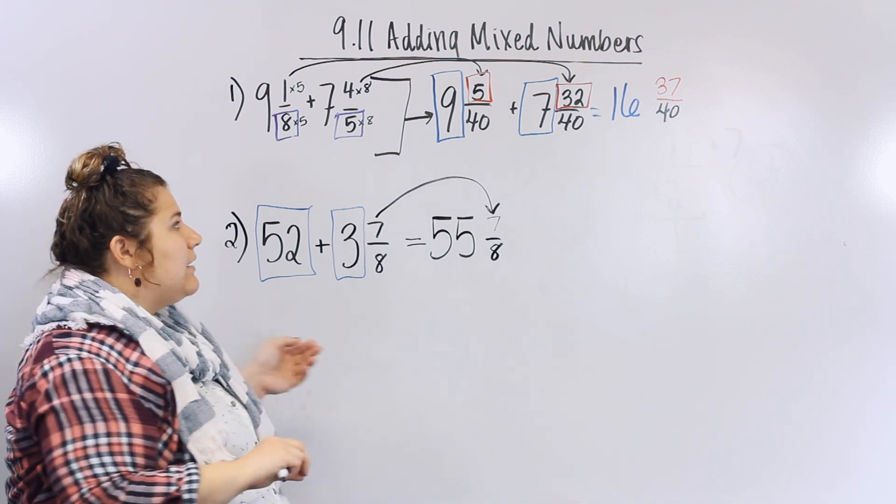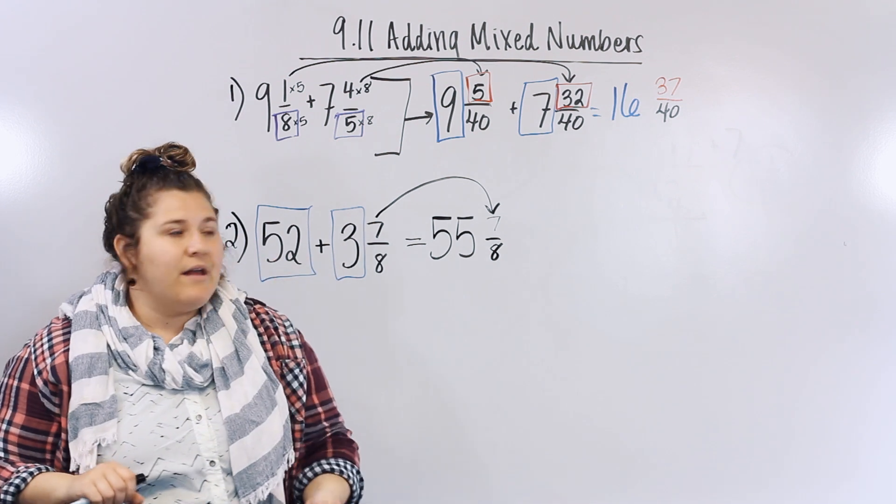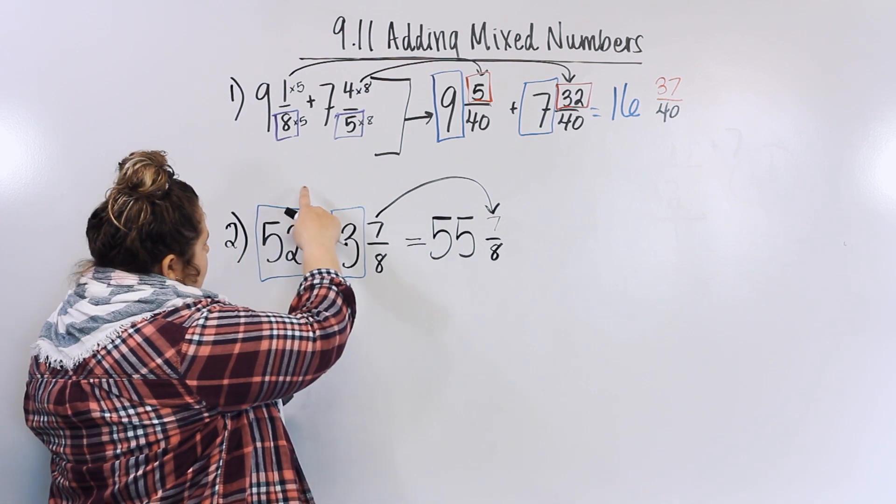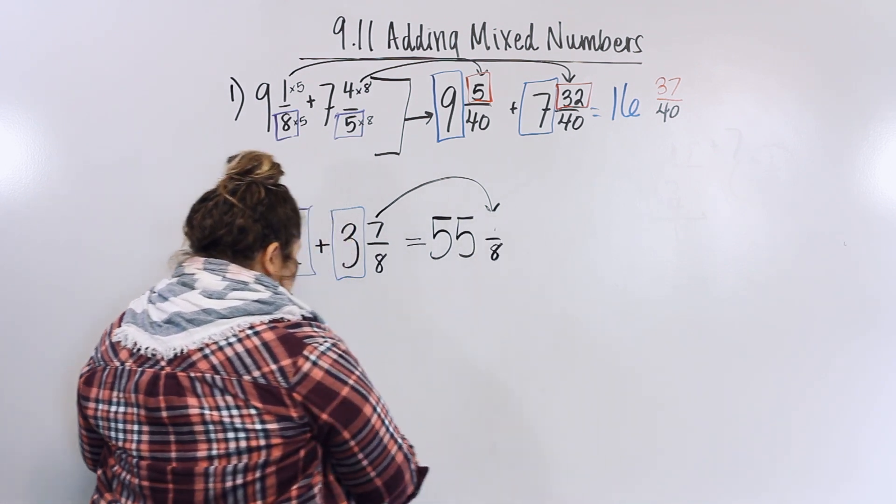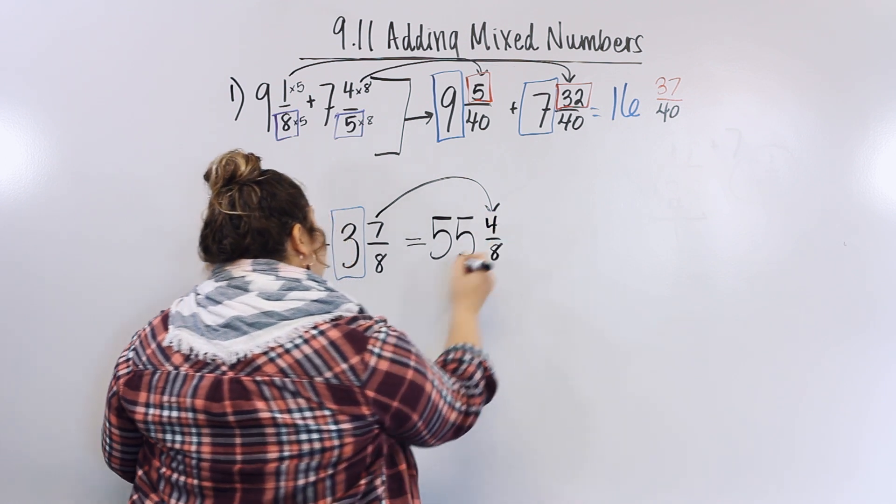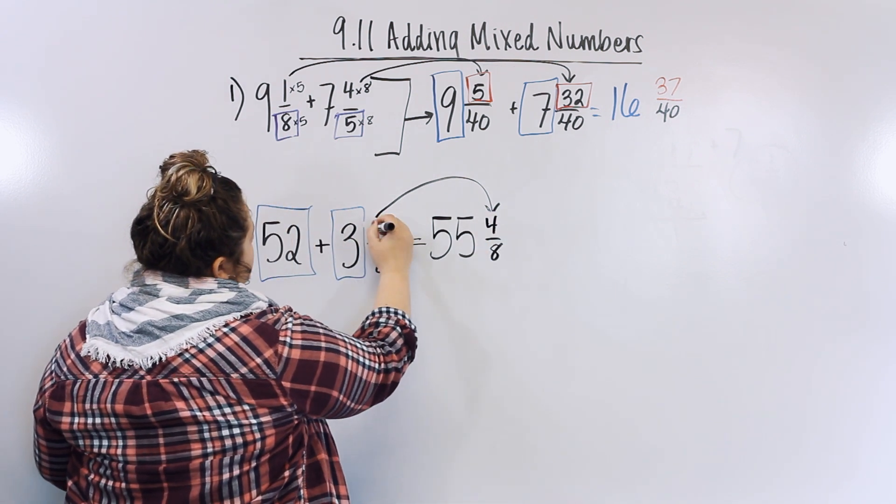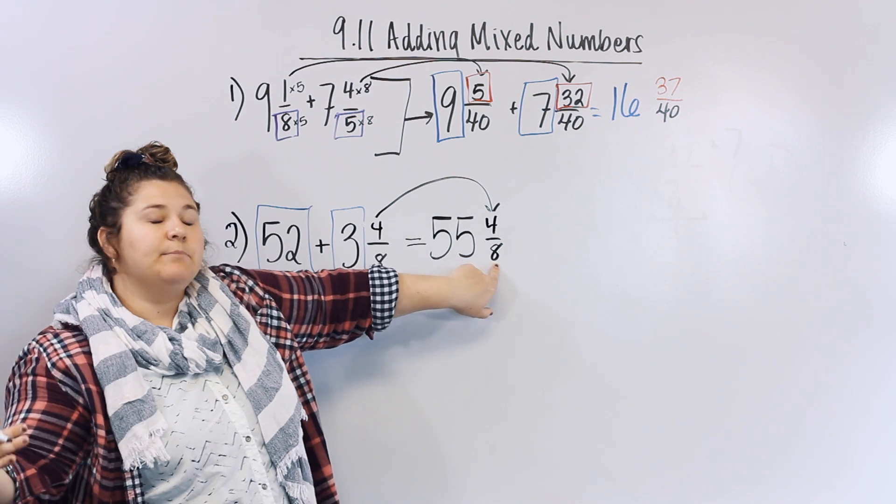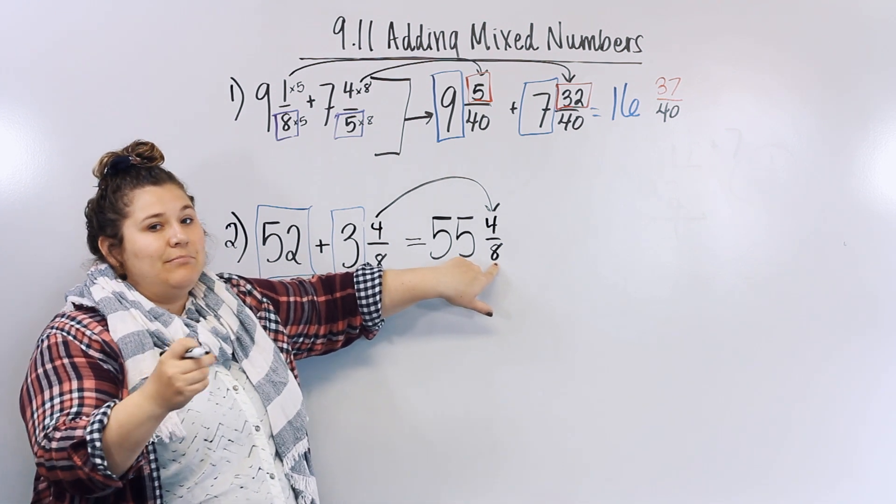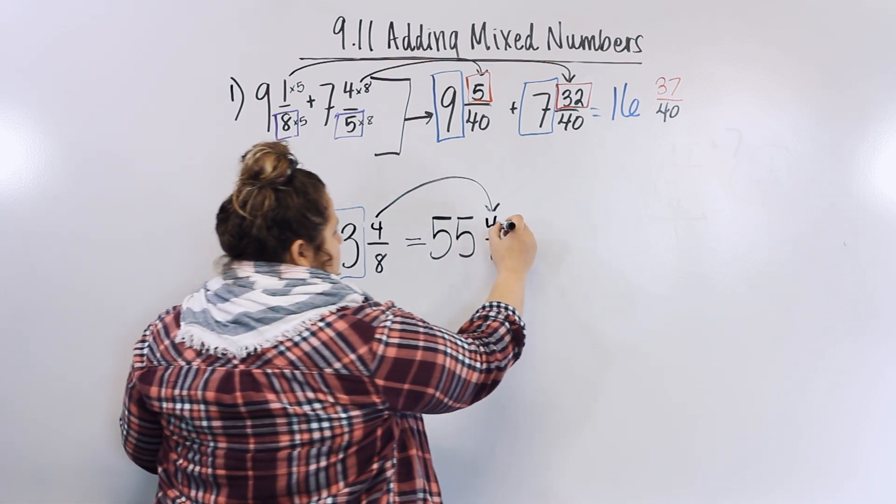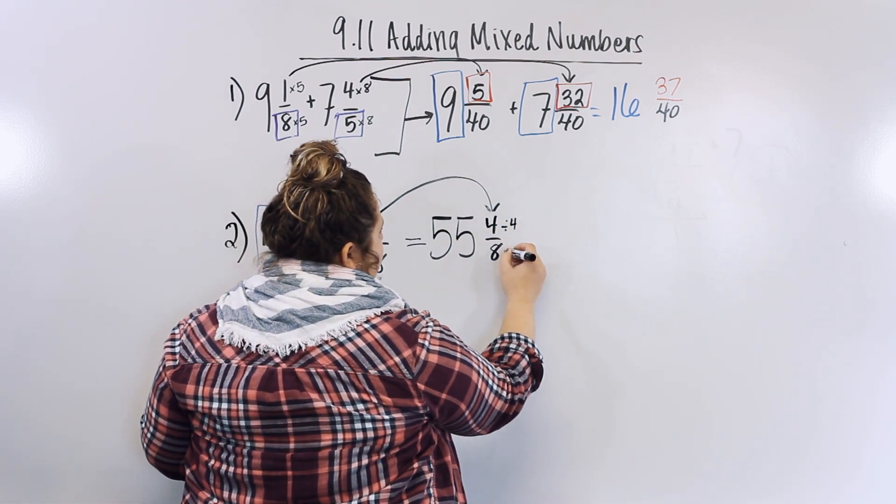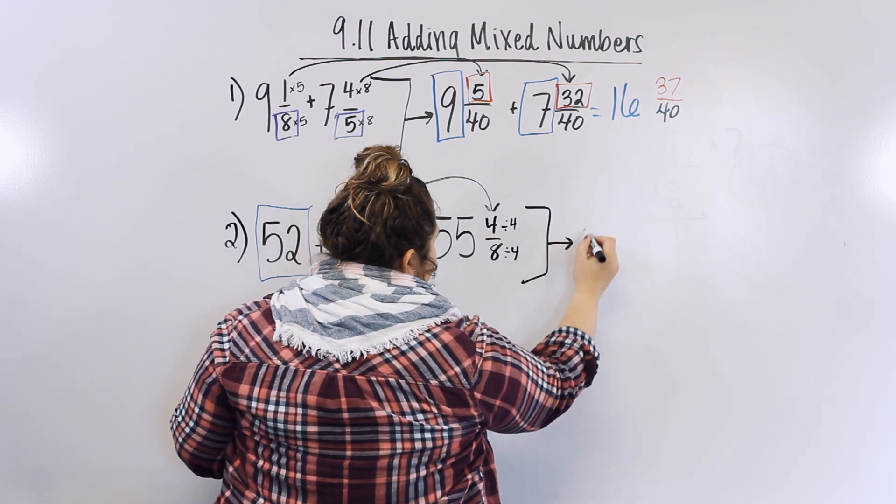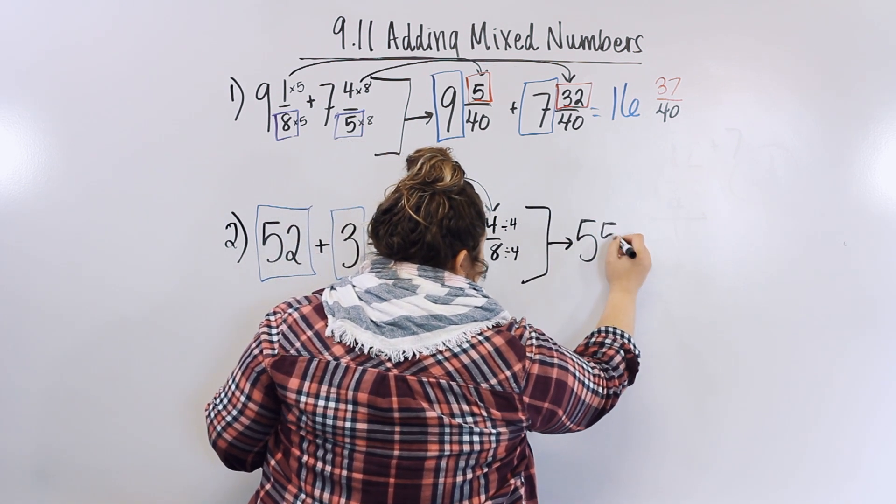Now if you have to simplify - say for example if you did have something here and it was four-eighths - I know four-eighths can simplify, so I need to make sure I simplify. So I know it can be divided by four, which now equals fifty-five and a half.